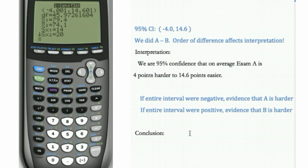So in this case, what's our conclusion? Well, it spans negative and positive. So because 0 is included, as well as positive and negatives, we don't really have evidence that either test was harder.